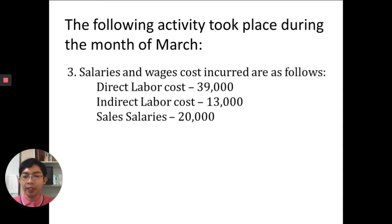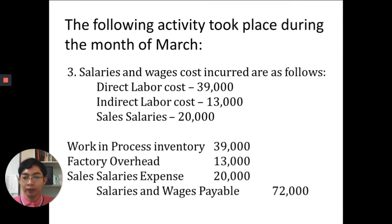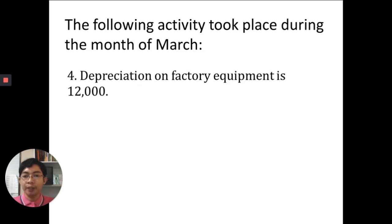Number three: salaries and wages incurred — direct labor cost $39,000, indirect labor cost $13,000, and sales salaries $20,000. Direct labor is recorded as work in process inventory $39,000; indirect labor goes to factory overhead $13,000; sales salaries are recorded as sales salaries expense $20,000. The credit is salaries and wages payable $72,000, since the problem is silent on whether we already paid.